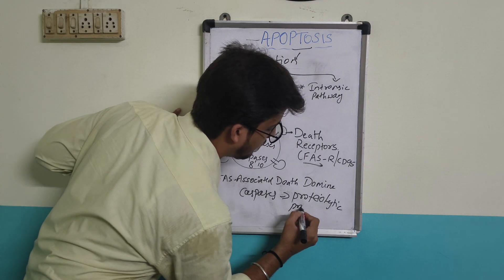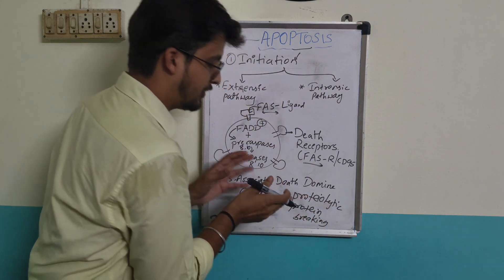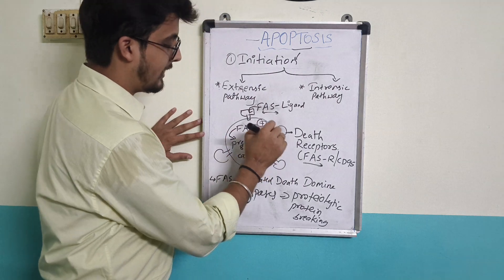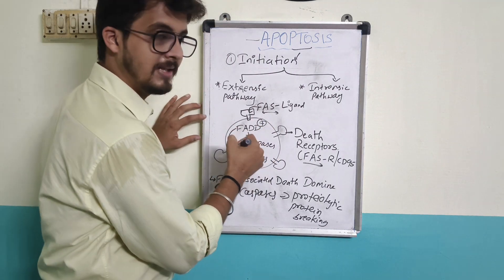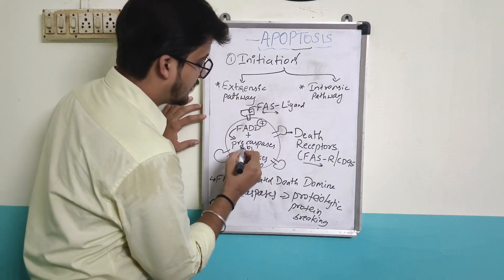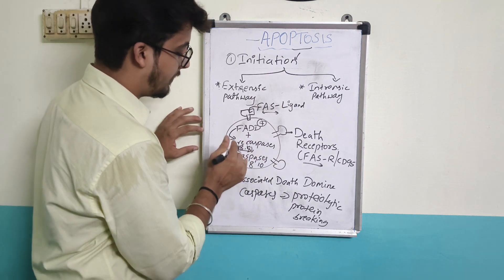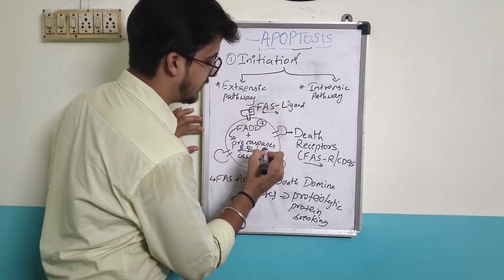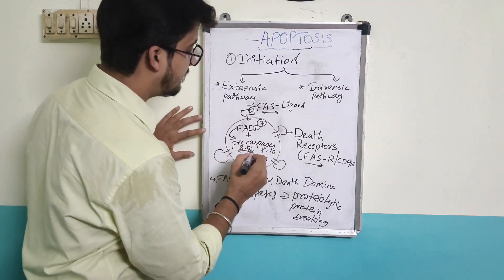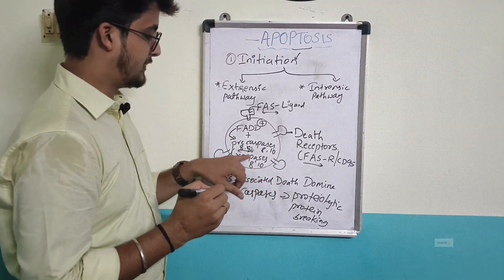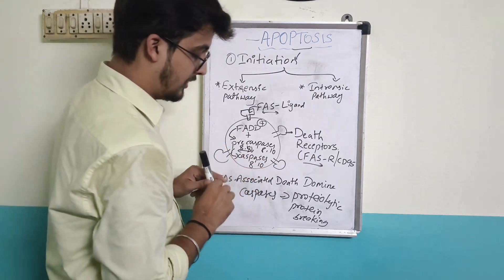The Fas ligand binds to the Fas receptor, which activates protein-breaking enzymes called caspases inside the cell. Normally, caspases are in an inactivated form inside the cell. The inactivated forms — called pro-caspases — most importantly pro-caspase 8 and pro-caspase 10 — get activated to become active caspase 8 and caspase 10.